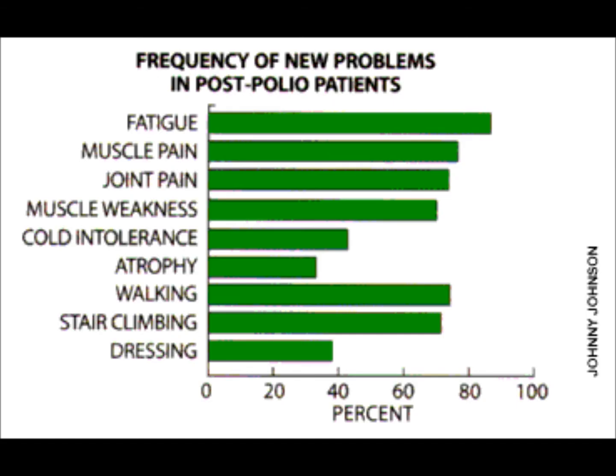In recent years, a new medical problem known as post-polio syndrome has been diagnosed. The condition shows up 15 to 40 years after the acute phase. Post-polio syndrome affects about 25% of all polio patients. The major symptom of post-polio syndrome is a very slow decrease in muscle strength.